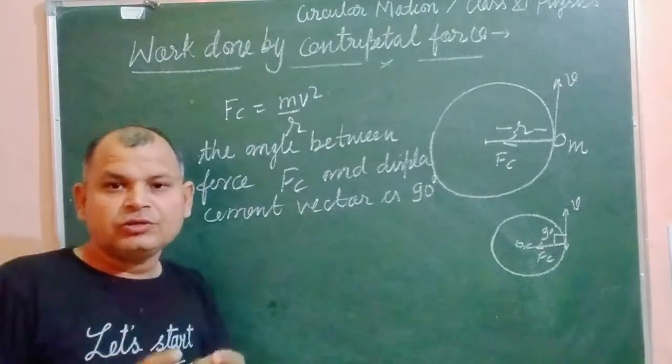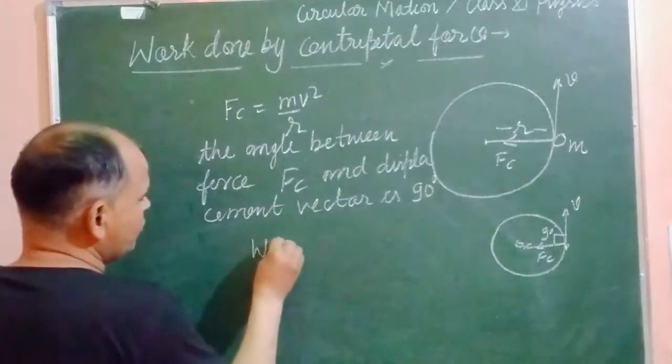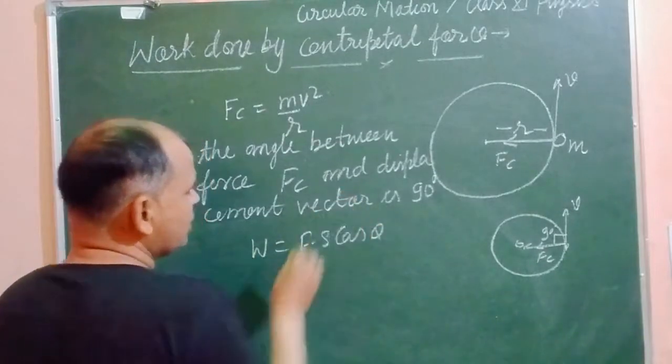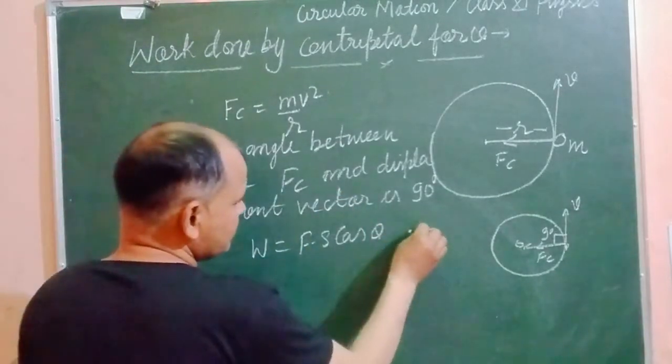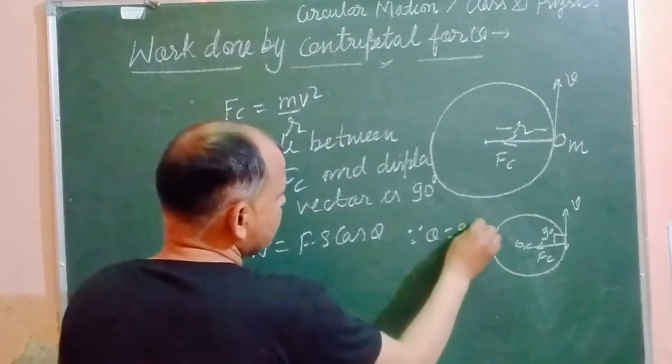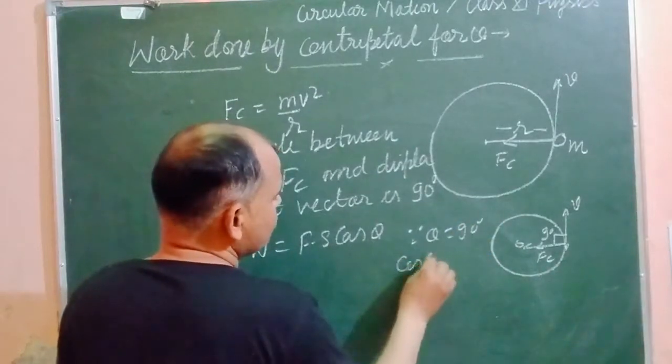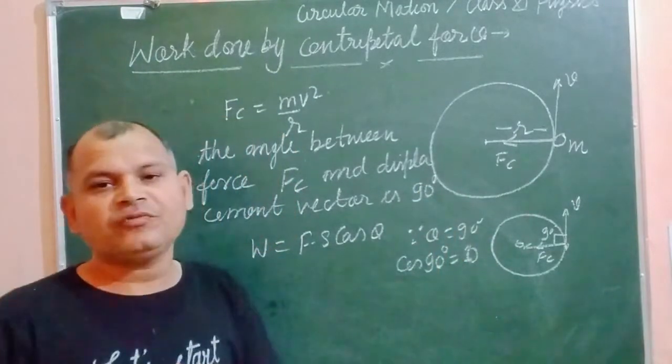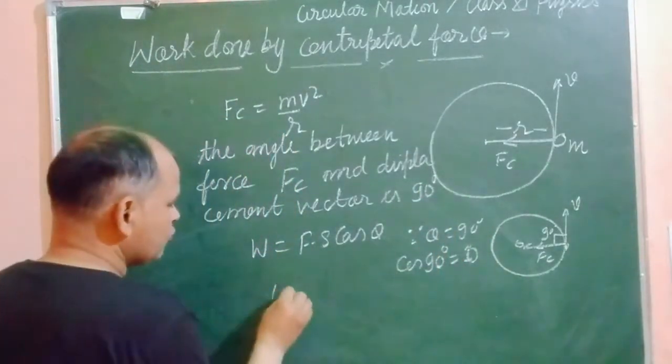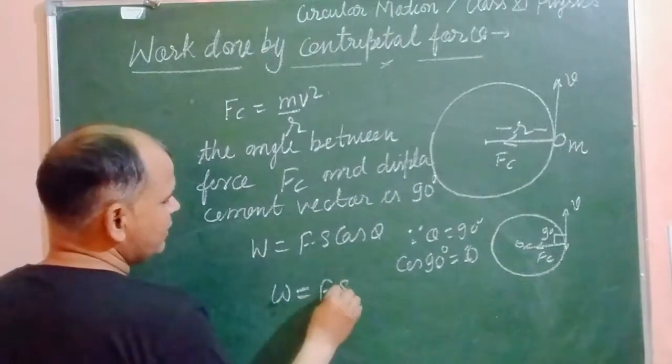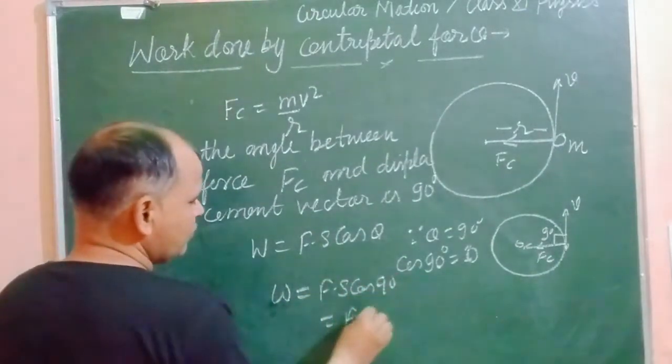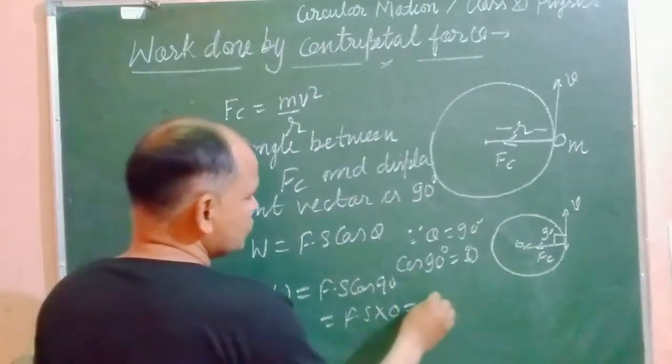So the work done W equals F into S cos theta. Since theta equals 90, we get cos 90. Value of cos 90 equals 0. So work done F into S cos 90 equals F into S times 0, which is 0.